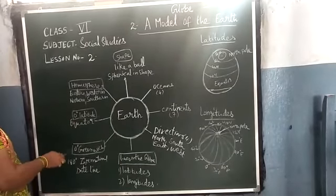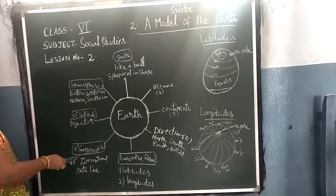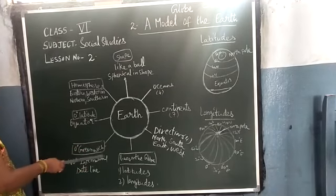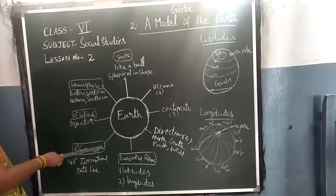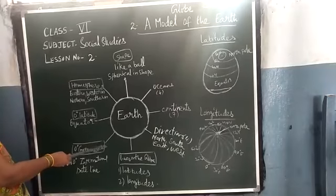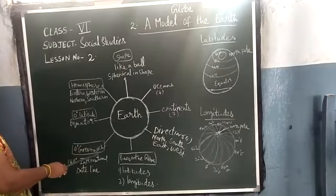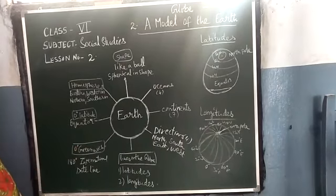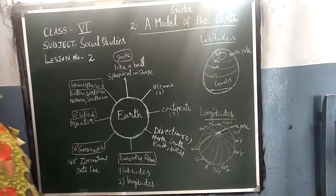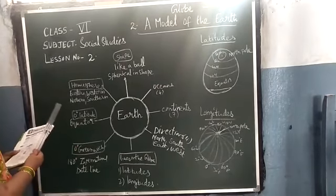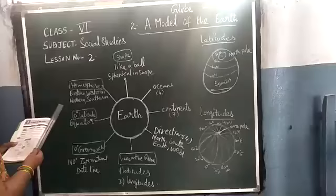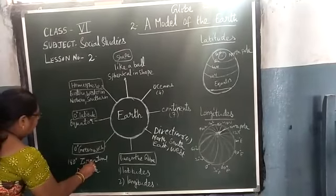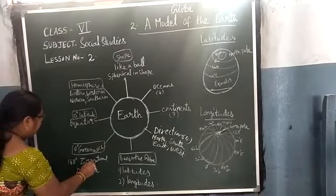What do we call zero latitude? Zero latitude is called the Greenwich meridian — which latitude? It is very important. And 180 degrees is the International Date Line.